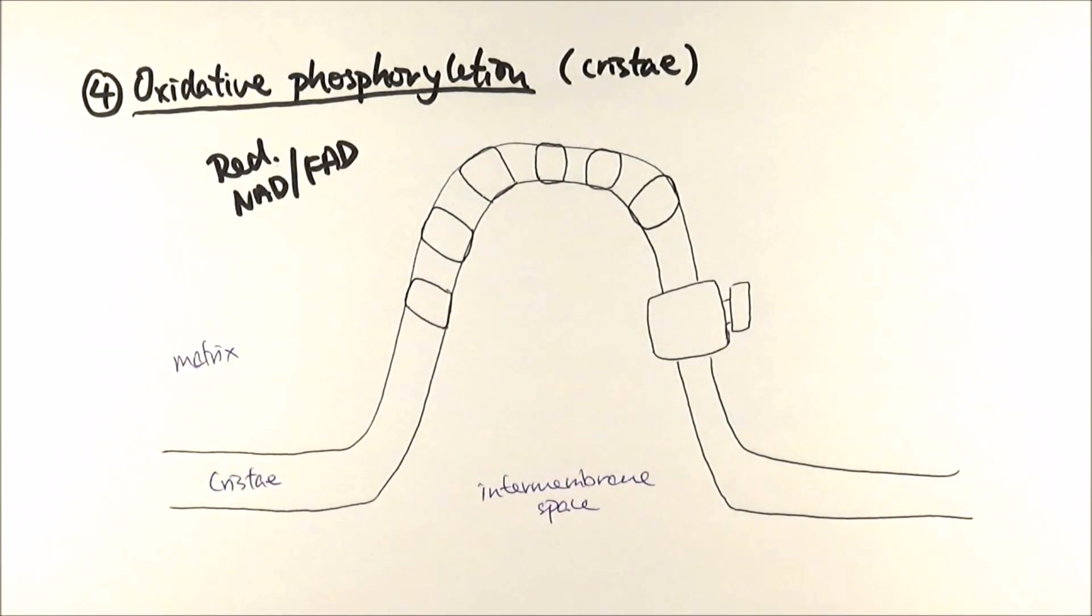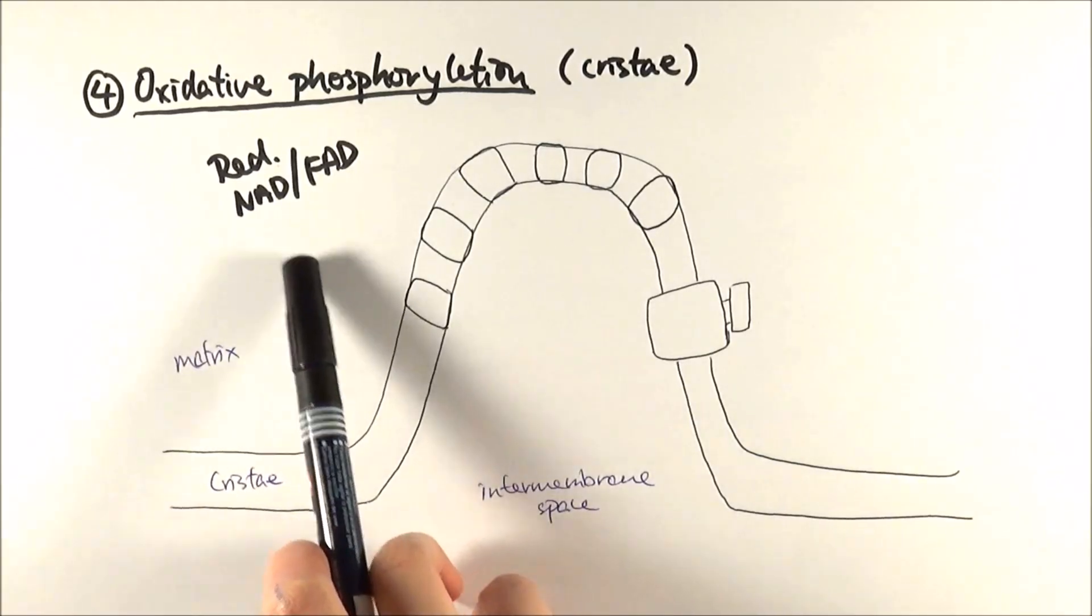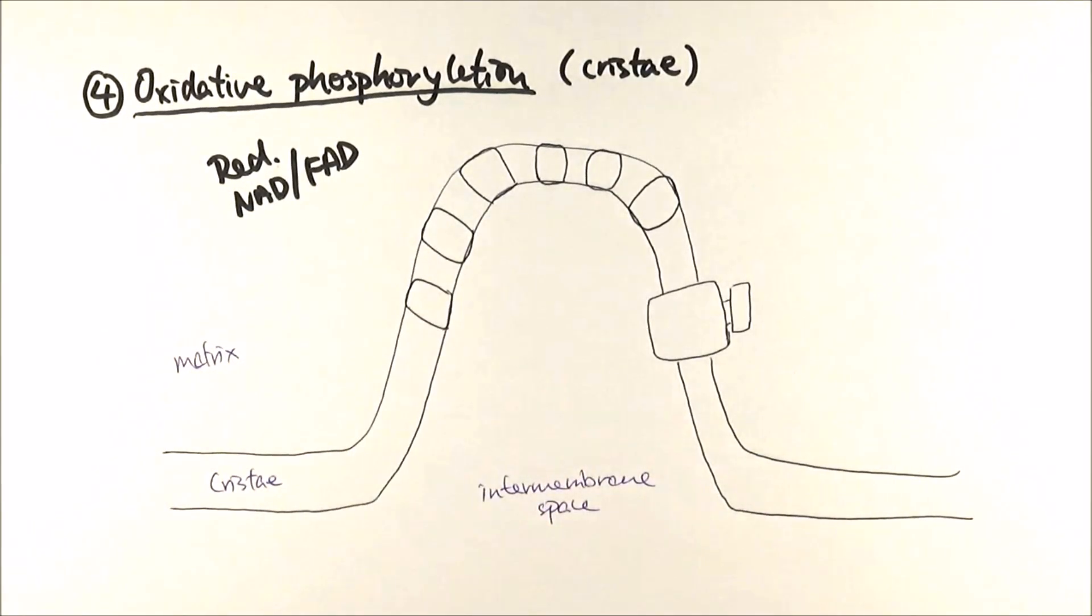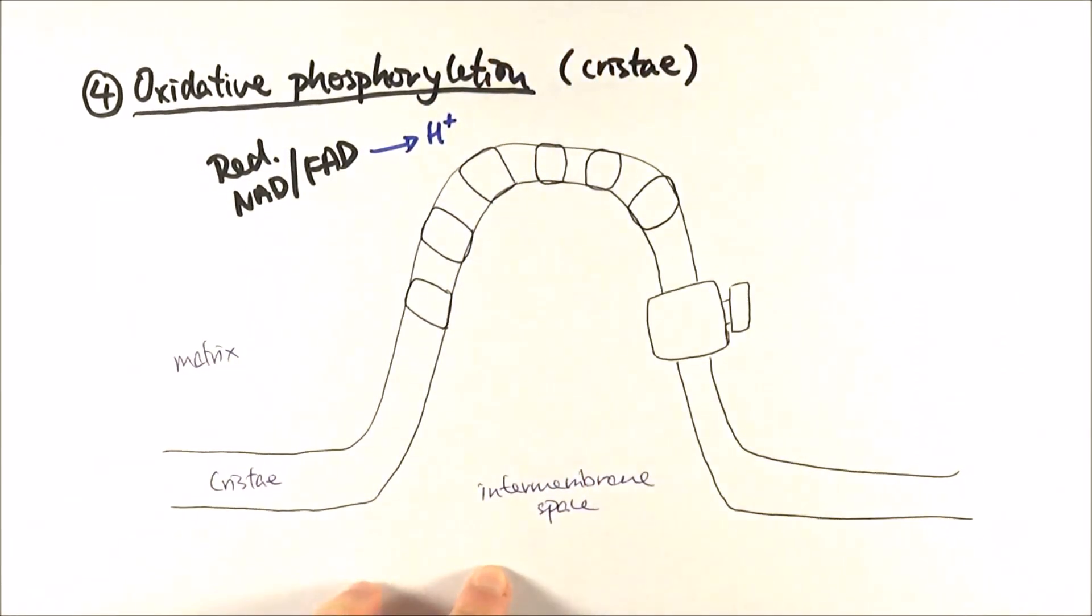As I said, reduced NAD carries one proton, and therefore, at this stage, it just releases that proton, and FAD releases two protons. Now, to save space, I'm just drawing one, but you get the idea.